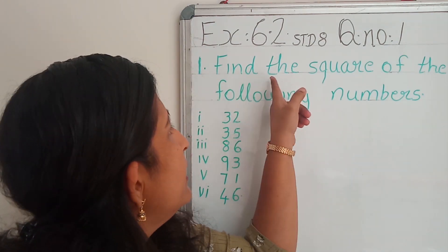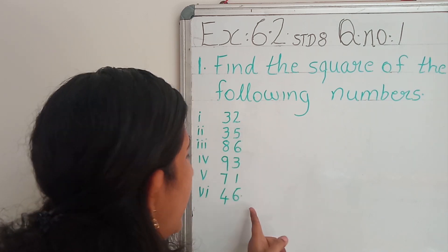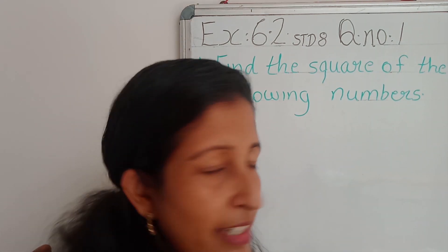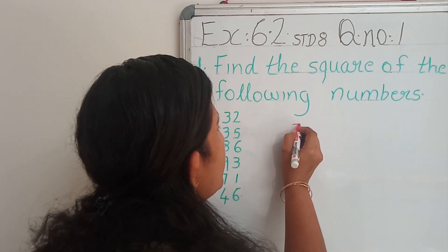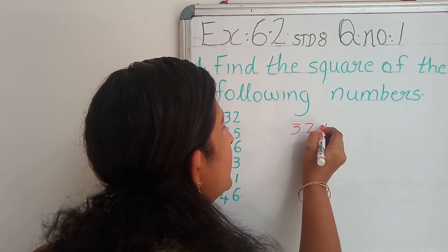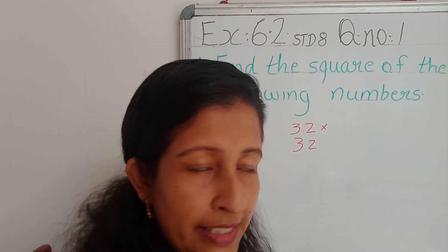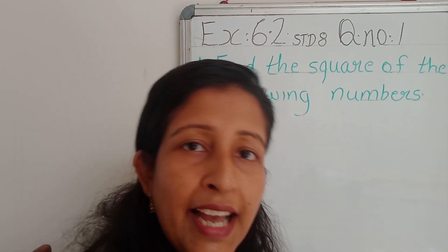Here we have to find the squares of the following numbers. Now we are going to find the squares of these numbers. The easy way is that, if you want you can do like 32 into 32. If you want you can do it like this. Otherwise, the easy way is using an identity.